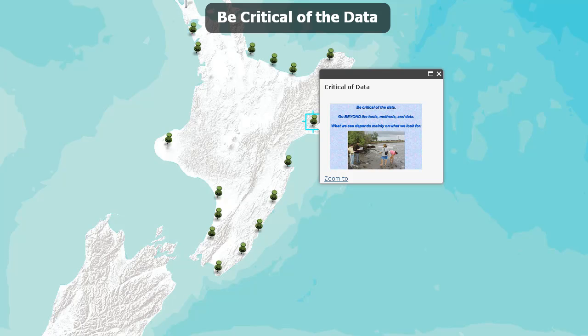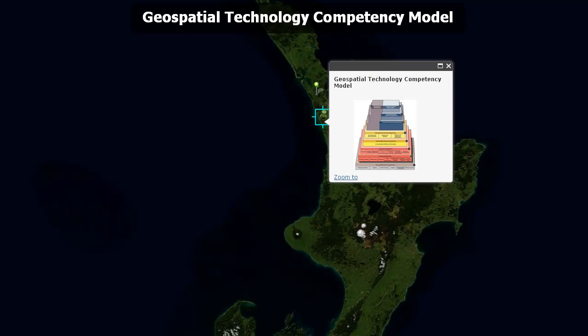Another thing I like about GIS in education is that it encourages students to be critical of the data. There is a monumental avalanche of geospatial and other data coming at us from all sides every day. GIS and spatial analysis encourage students to go beyond the tools — look at the methods used, look at the data used. What we see mainly depends on what we look for. It encourages students to think critically: where did the data come from, who created it, why was it created, what date, was it updated? Making sense of data and being critical of it.